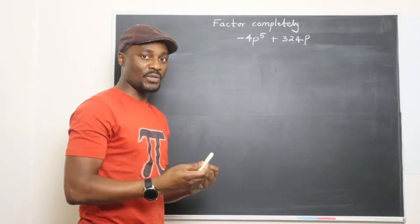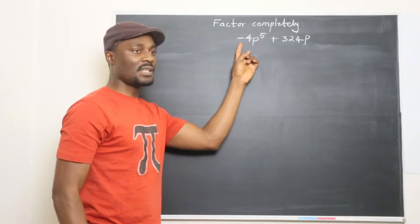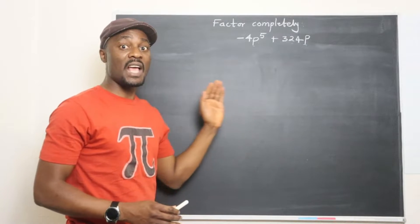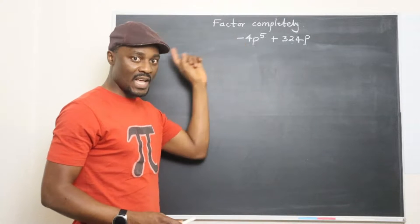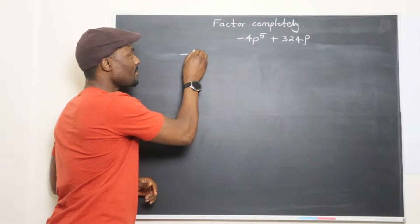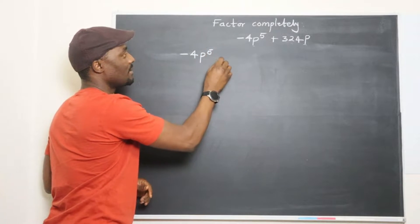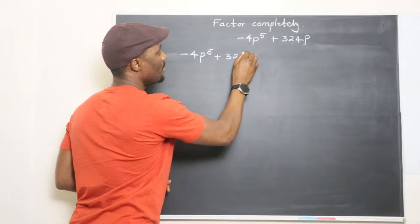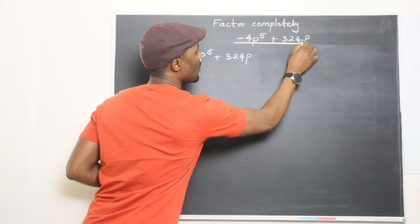So I can take out 4, I can also take out P, but there's a negative sign here. You don't want to have your leading coefficient being a negative number, so you want to also take out the negative. So we're going to have negative 4P to the fifth plus 324P. This is the question.